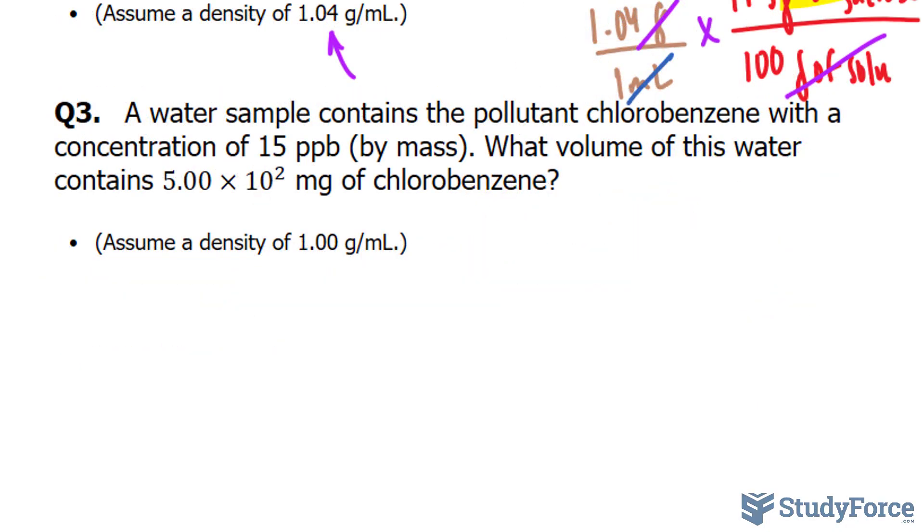For this last question we're asked, a water sample contains the pollutant chlorobenzene with a concentration of 15 ppb by mass. What volume of this water contains 5.00 times 10 to the power of 2 milligrams of chlorobenzene? To do this problem we have to understand first what ppb means, it's parts per billion.